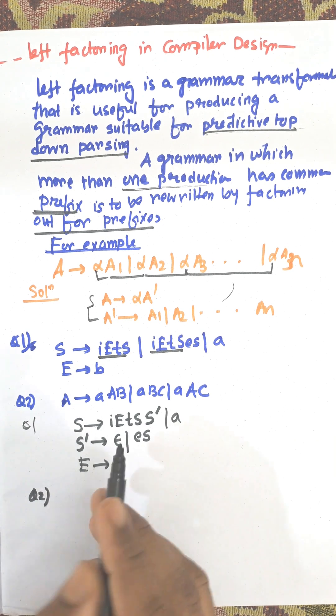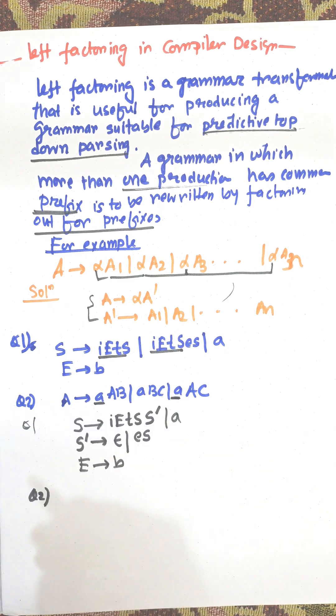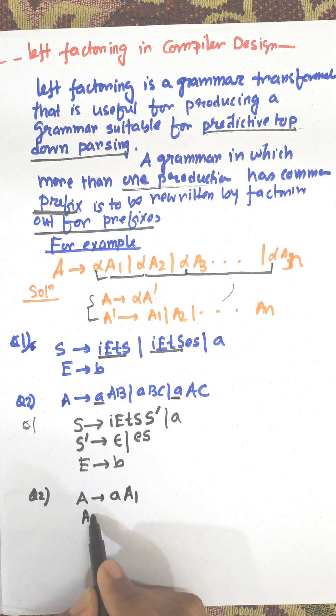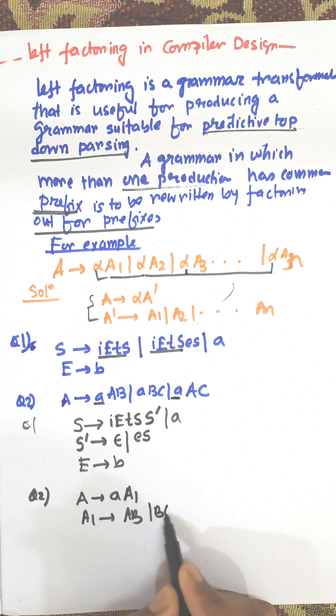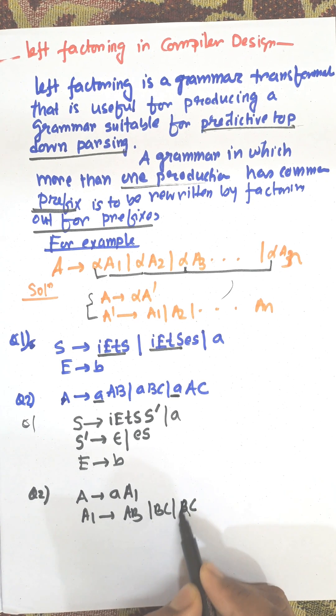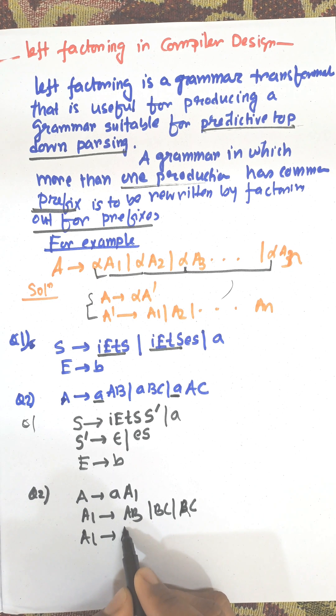Now question number two. Here left factoring: A is the first one. So A produces A A1, and from A1, that can be AB, BC, or AC. And now from AC, here again left factoring is there, so we need to remove this again.